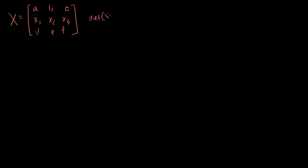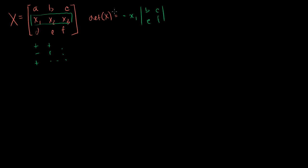What's the determinant of X? We expand along that middle row, remembering the checkerboard pattern of plus, minus, plus. So it's going to be: minus X1 times the submatrix (B, C, E, F), plus X2 times the submatrix (A, C, D, F), minus X3 times the submatrix (A, B, D, E).